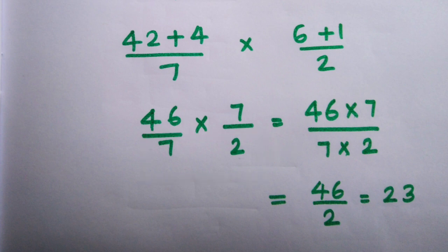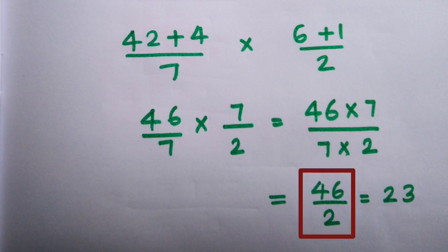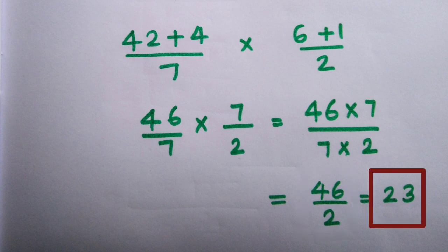Here we can cancel the number 7, since 7 appears in both the numerator and denominator. After cancelling the 7, we get 46/2. Dividing, we get 23 as the final answer.